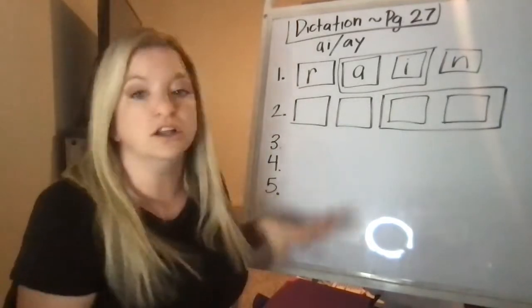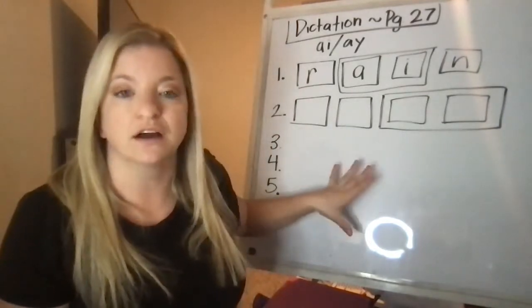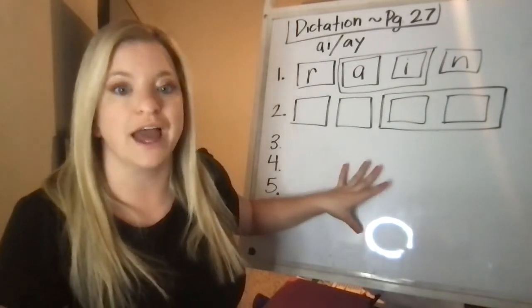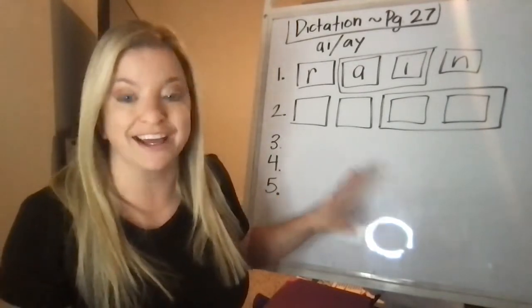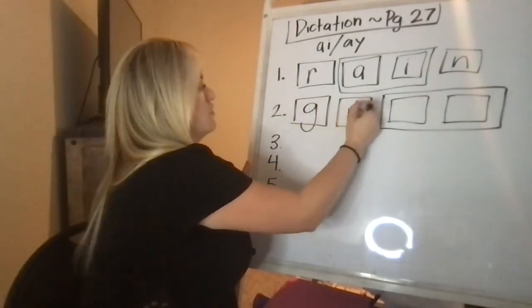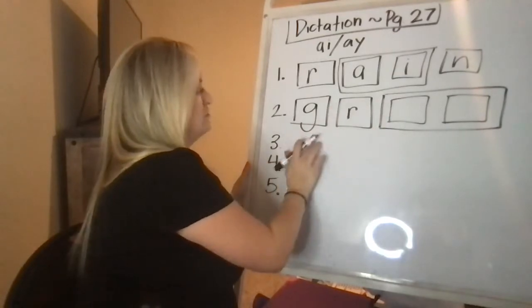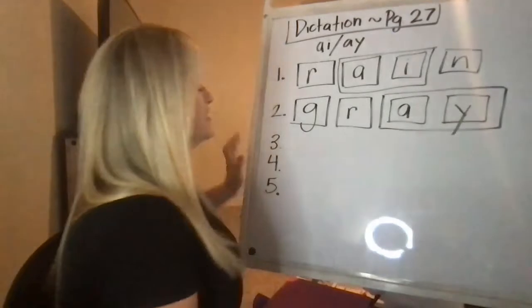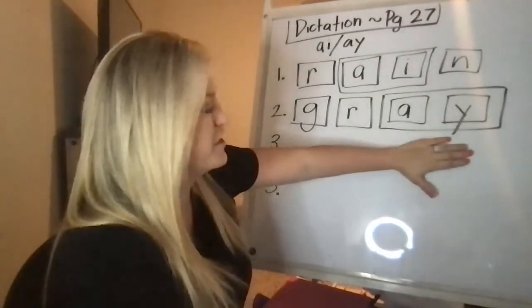The next one is the color gray. G-R-A-Y. G-R-A-Y. Gray. G-R-A-Y. And this should hang down. Hey, that's okay. Remember what I said? You're never going to have an A-I at the end.